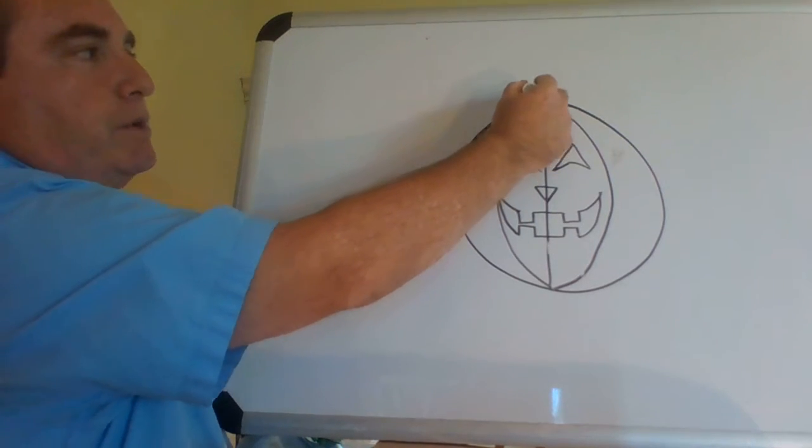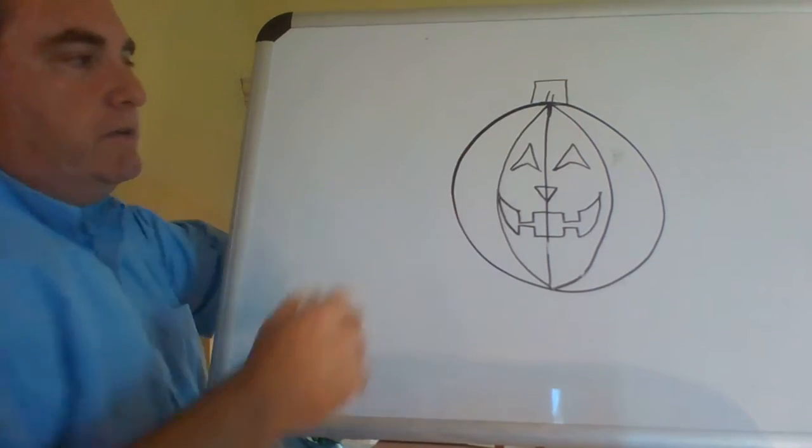And to finish it off, we're going to put a square at the top, or a rectangle. And now we've got our stem.